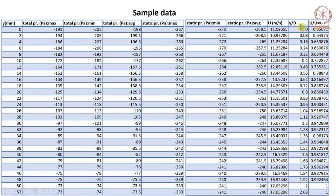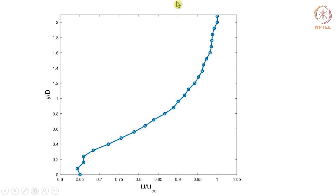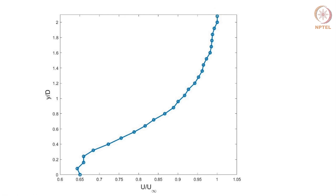Once we have performed all the calculations and made the table, the last two columns will be used to plot the distribution of velocity in the wake region. Y divided by D, the non-dimensional Y values, are plotted along the Y axis, and the X axis represents the non-dimensional velocity in the wake region. As we go up, we can see that the velocity of the wake region gradually increases, and finally it asymptotically matches the free stream velocity value.